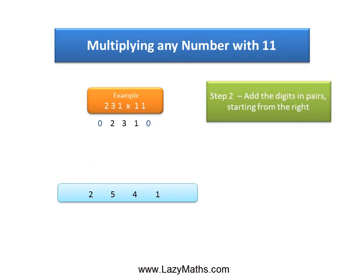And we get 2541 as our final answer. So 231 times 11 equals 2541. And that's it. Thank you.